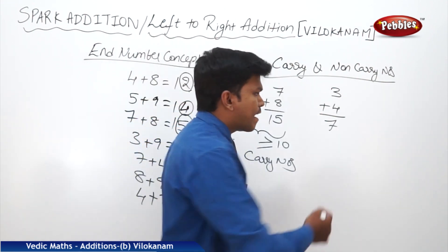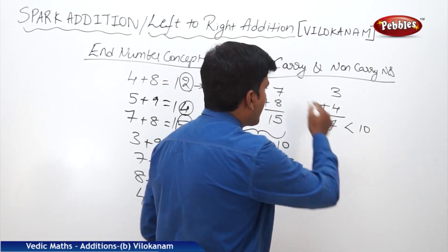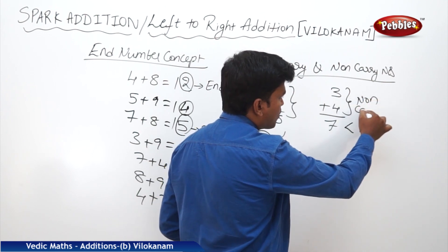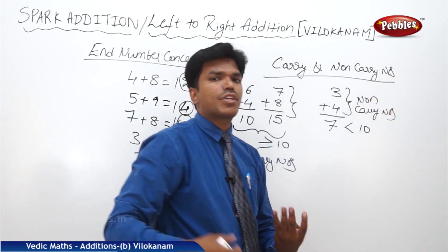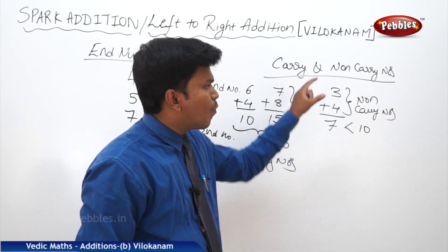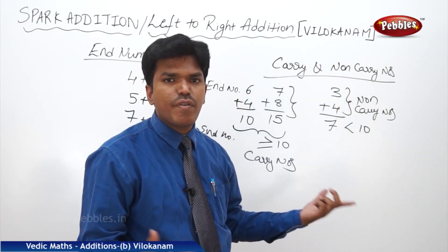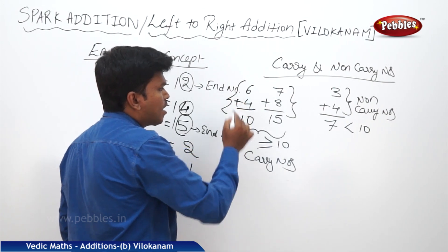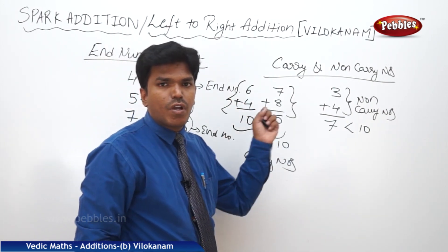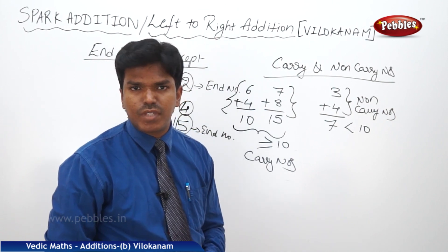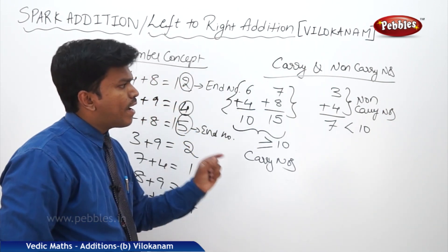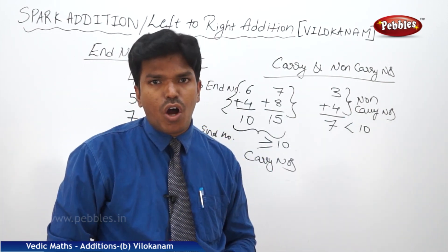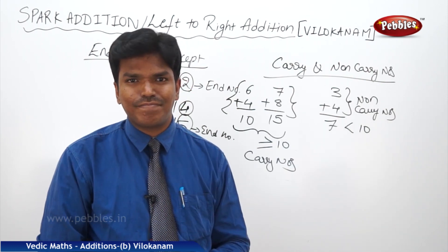If the sum is less than 10, those numbers are called non-carry numbers — they don't generate a carry. Numbers whose sum is 10 or more are carry numbers because they carry 1. Now let us apply these concepts and go deeper into the method to see how they help us.